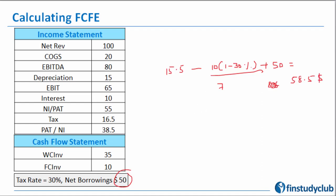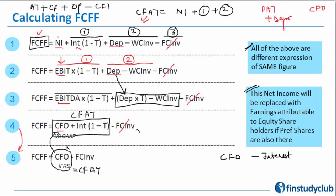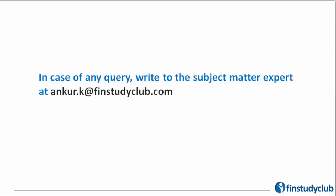I hope this calculation is now less confusing. I'll come back to the role of preference shares in a forthcoming session — that point needs more detailing. In the next session I'll also cover the inputs for FCFF. Should you have any questions, please post them at anku.k@finstudyclub.com.